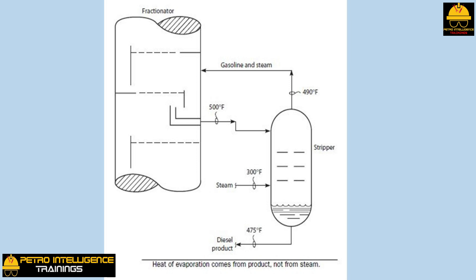High liquid levels in the bottom of the stripper will also reduce stripping efficiency. A liquid level above the steam inlet will cause the stripping trays to flood. Flooding vastly decreases tray efficiency and hence stripping efficiency. Tray deck dumping also greatly reduces tray efficiency. Unfortunately, steam strippers can have widely varying vapor rates between the top and bottom trays of a column.